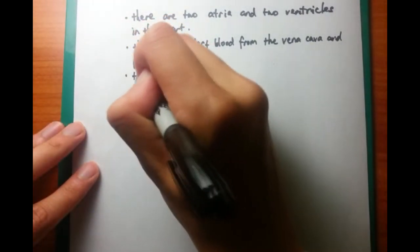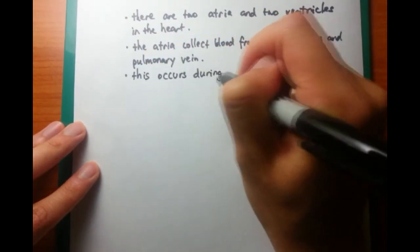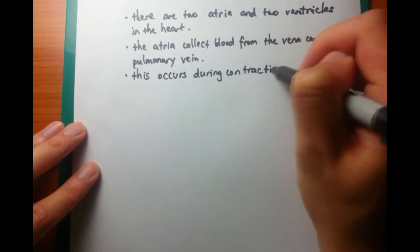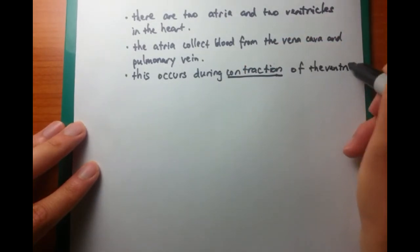When atria fill, that is during contraction of the ventricles. They're opposite. So when the atria fill, the ventricles contract. When the atria contract, the ventricles fill.